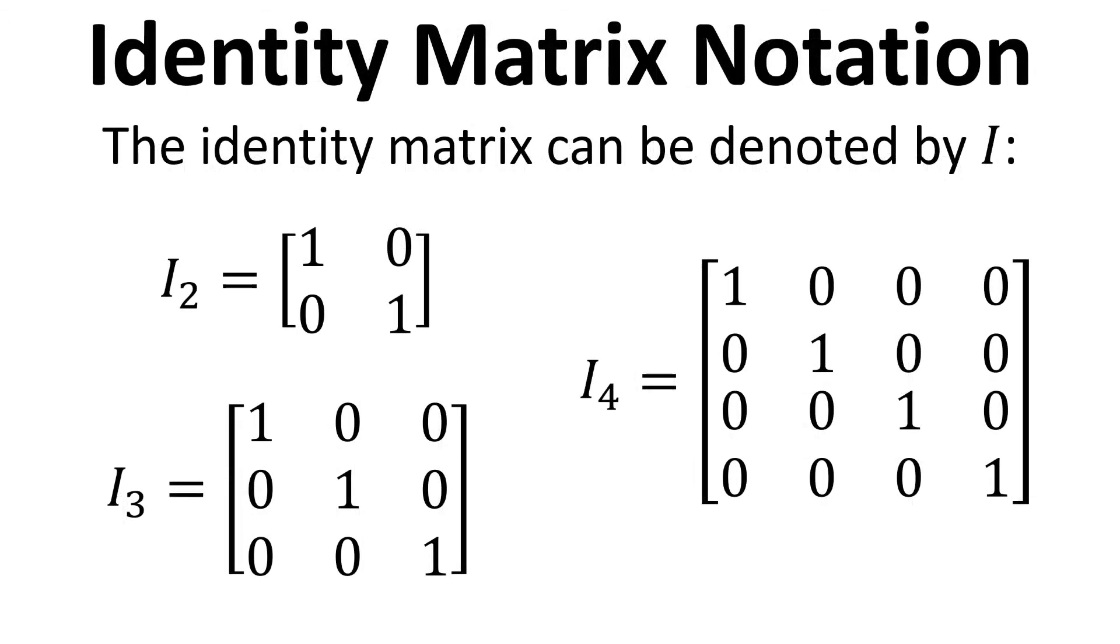And the identity matrix can be denoted simply by the letter I, capital I, and we often have a subscript to denote the size of the identity matrix. So I subscript 2 is a 2 by 2 identity matrix, for example.